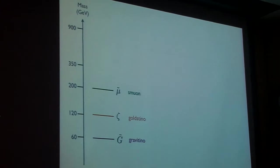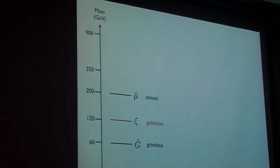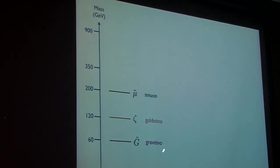The players in this game are going to be the smuon, the supersymmetric version of who ordered that, the Goldstino, and the Gravitino.